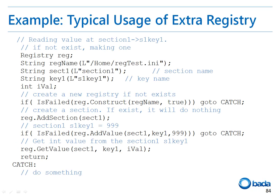Let me show you how to use the registry. First, specify the reg name to a string variable — the reg name is /home/regtest.INI. Section1 has been set as the section name and S1K1 as the key name. Then construct the registry giving the registry name to read the registry. You can add a section using the addSection function. To add a key-value pair to a section, call the addValue function giving the section name, key name, and value. To read the added value, call the getValue function that returns the IVal containing the value.